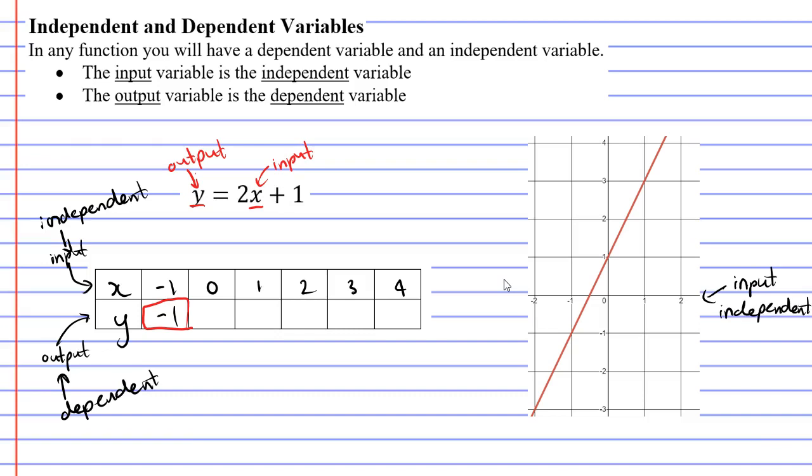Which means that the vertical axis is where we put our output variables, which are also known as the dependent variables. So quite often we have our x-axis as our horizontal axis and our y-axis as our vertical axis.